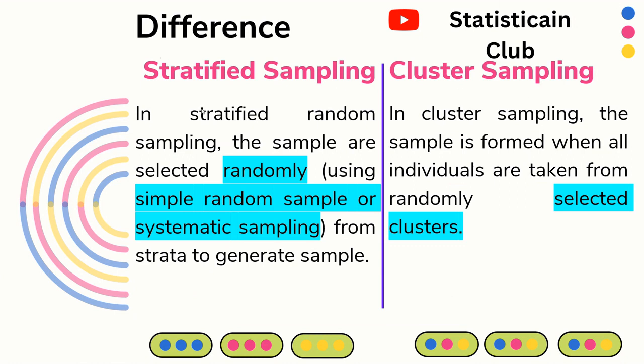Second difference: in stratified random sampling, the samples are selected randomly. The procedure is that from a population, you divide it into homogeneous groups called strata, and from these strata you select sampling units using simple random sampling or systematic sampling. In practical life, mostly we use simple random sampling, so there is randomness involved. Therefore, stratified random sampling is considered a random sampling method.